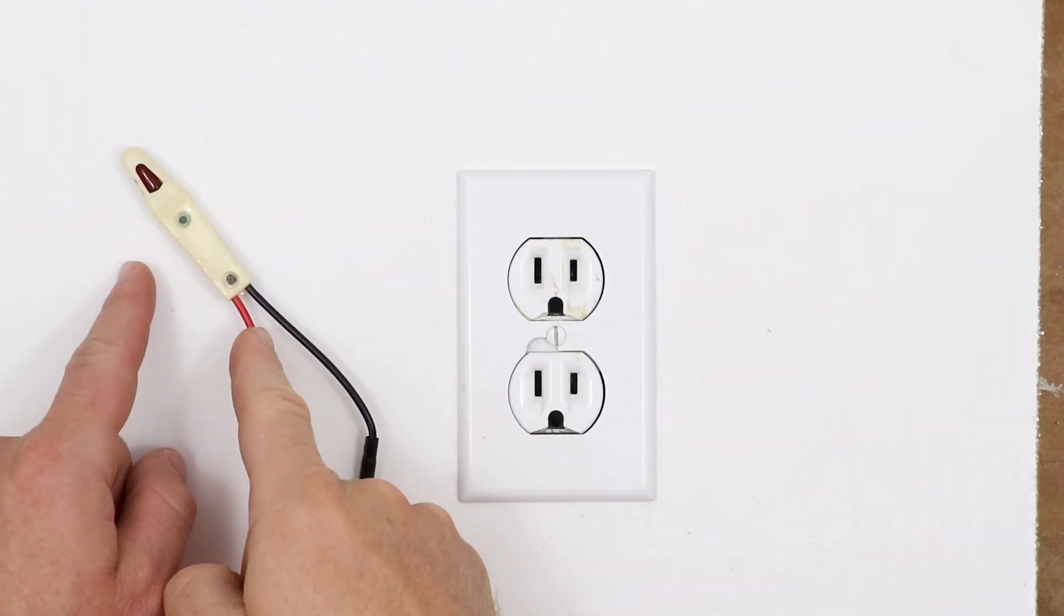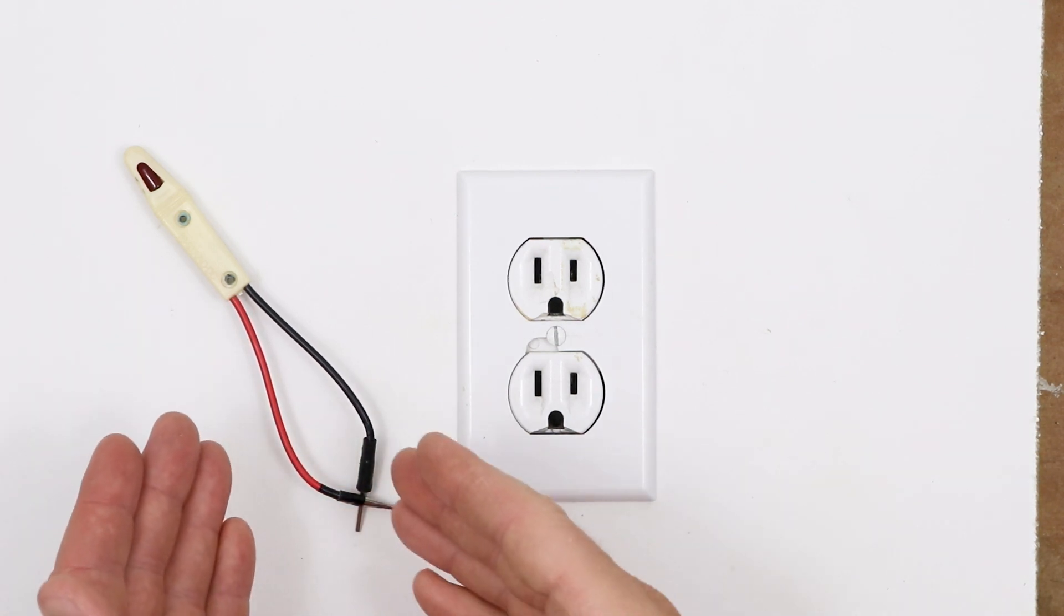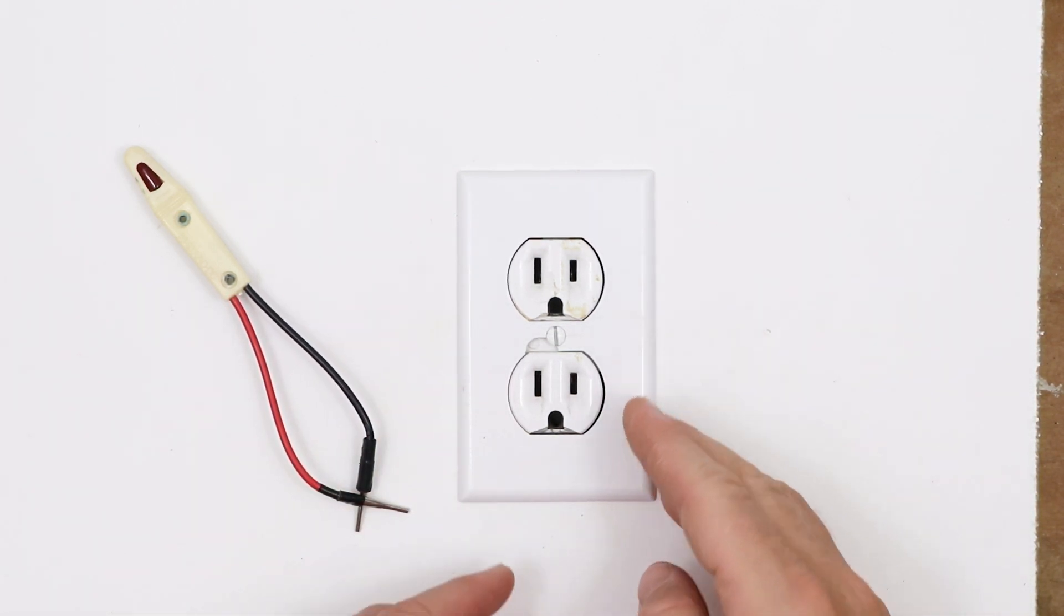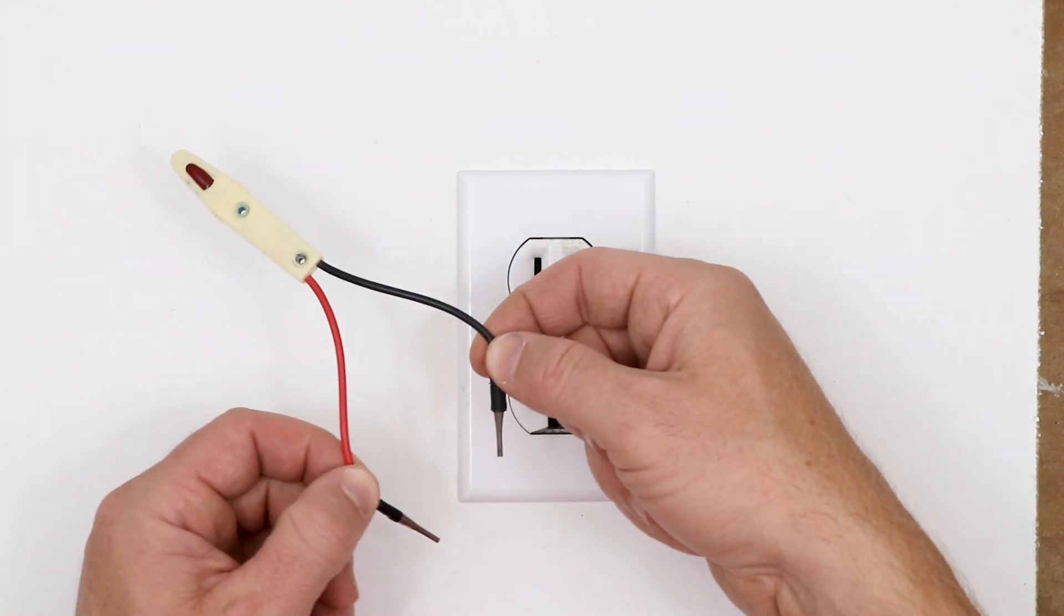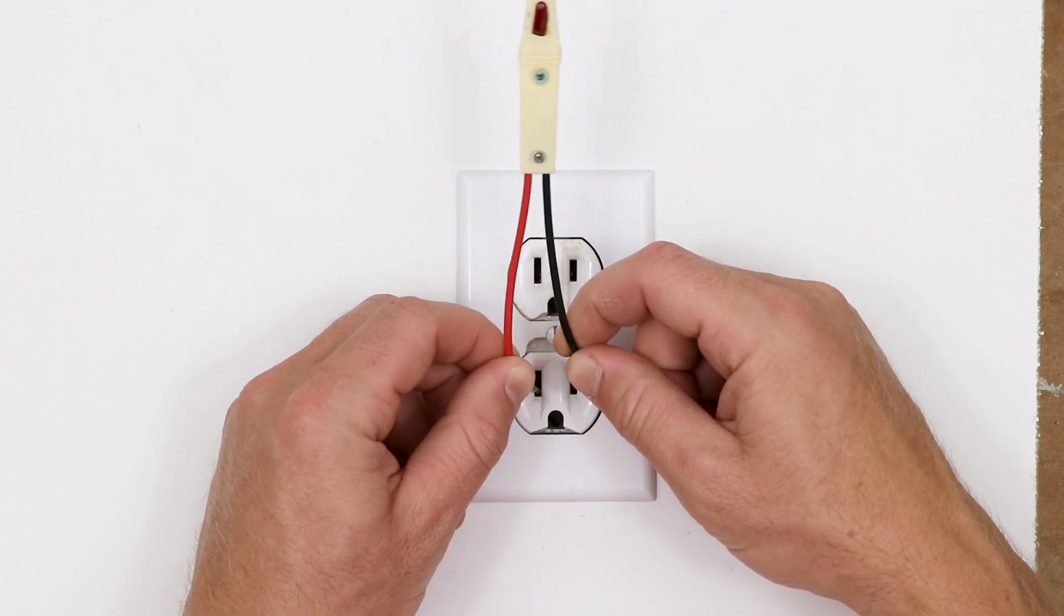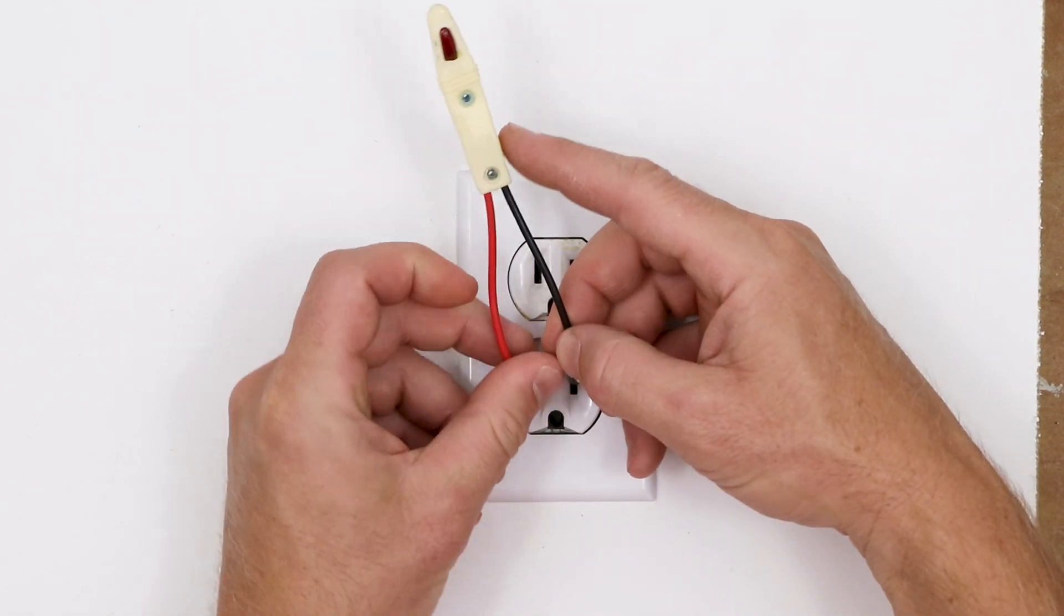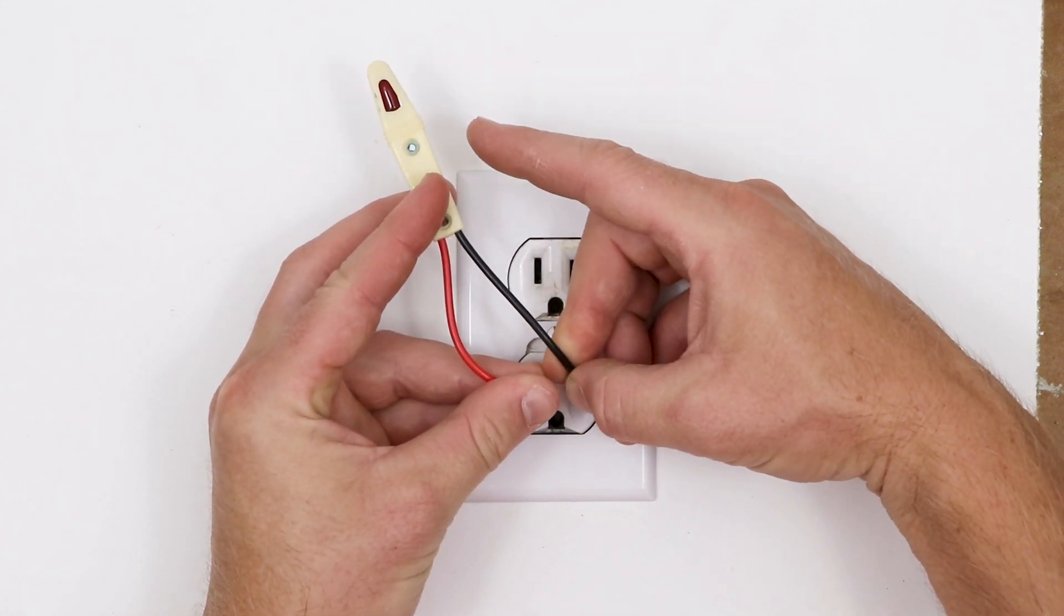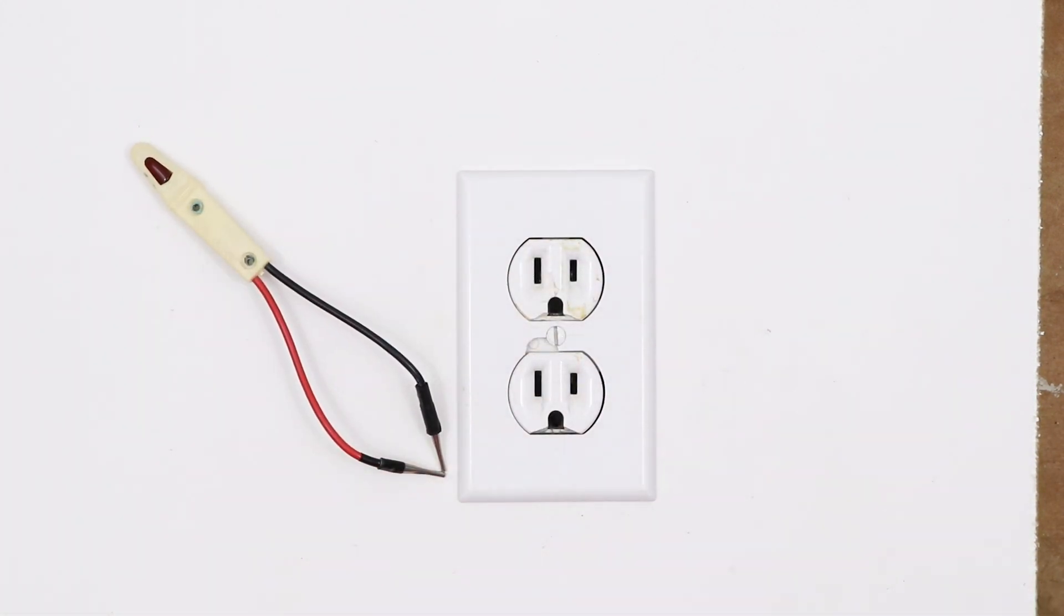Before I can trust this voltage tester on this job, I need to verify that it works and I'm going to test it on a known working circuit. So here I have a receptacle, I'm going to take either of these probes and stick them into that bottom part of the receptacle. It does not matter which color probe goes into which side as long as they are the same receptacle. And I have an indicator light going on, it has detected voltage, I know that it works now and I can trust it for this job.